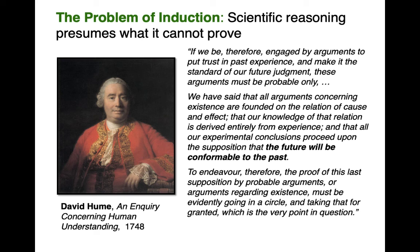This is David Hume in 1748: 'If we be, therefore, engaged by arguments to put trust in past experience, and make it the standard of our future judgment, these arguments must be probable only. We have said that all arguments concerning existence are founded on the relation of cause and effect, that our knowledge of that relation is derived entirely from experience, and that all our experimental conclusions proceed upon the supposition that the future will be conformable to the past. To endeavor, therefore, the proof of this last supposition by probable arguments must be evidently going in a circle, and taking that for granted which is the very point in question.'